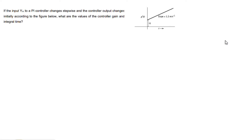Hi there and welcome back. Let us look at a process control example. We are told that the input ym to a PI controller changes stepwise, and the controller output changes initially according to the figure. What are the values of the controller gain and integral time? ym is given as is equals to 2, and we are also given the diagram.